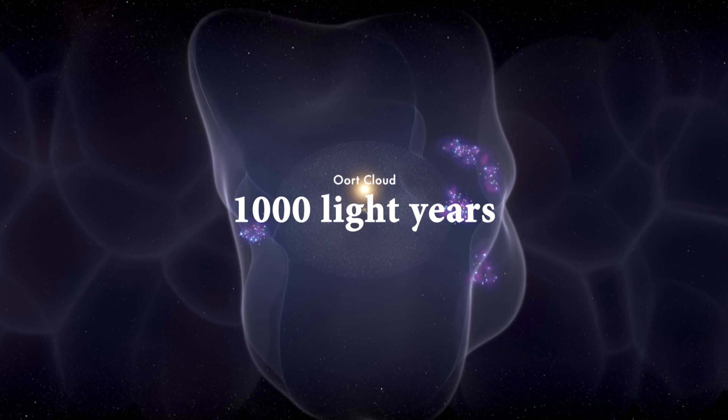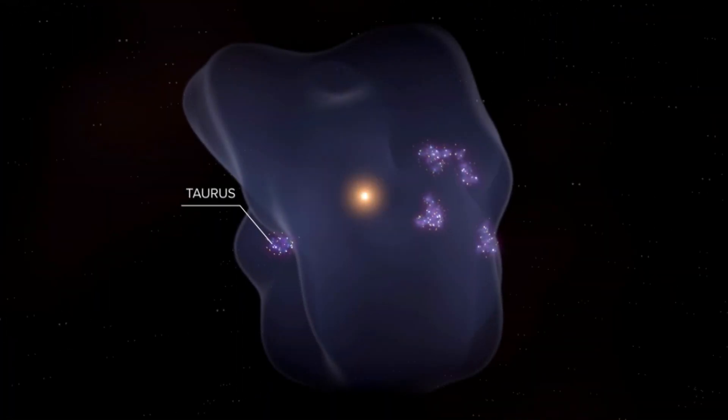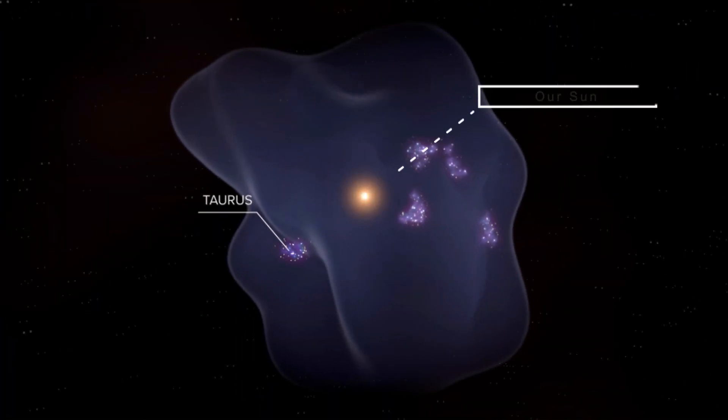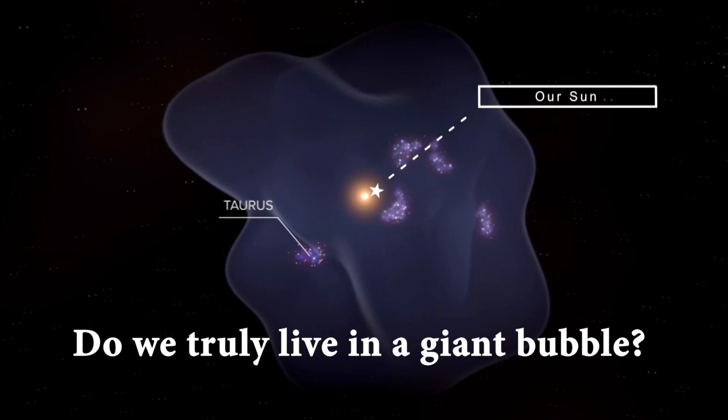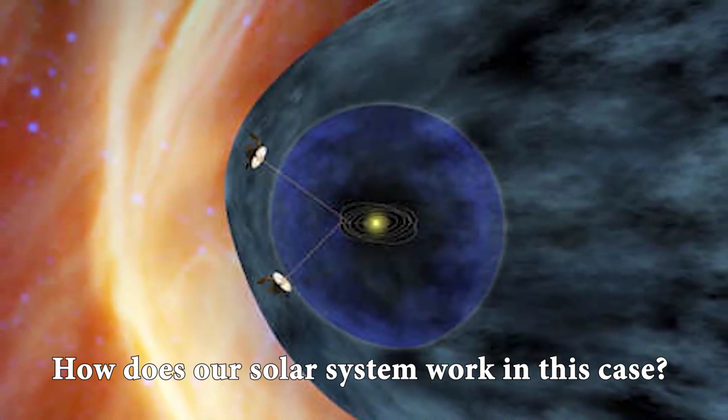It has a radius of 1,000 light years. What's more amazing is that our Sun is nearly in the middle of this bubble. Do we truly live in a giant bubble? And how does our solar system work in this case?